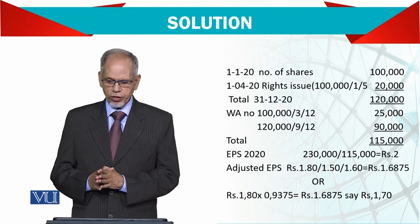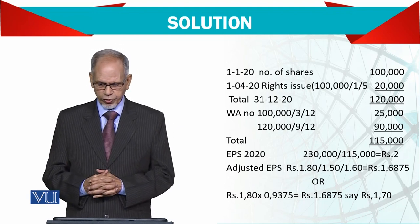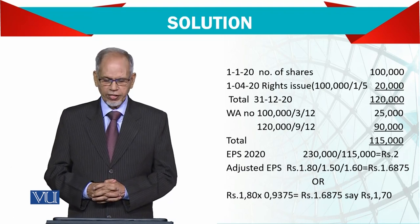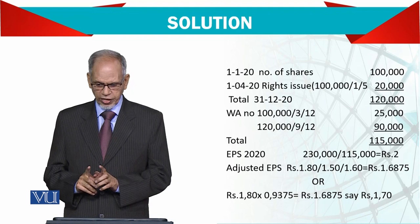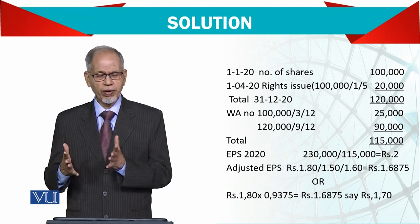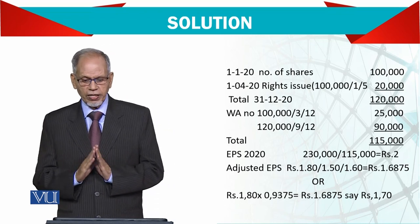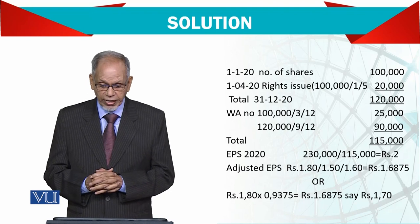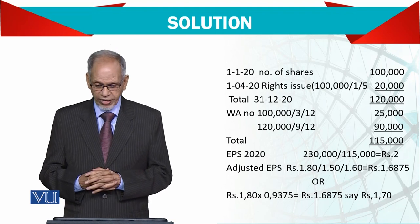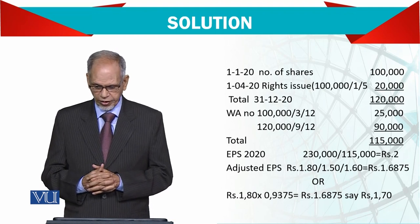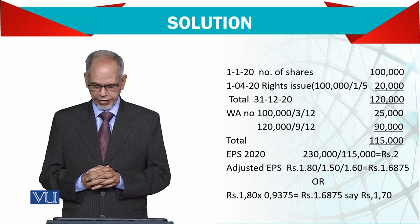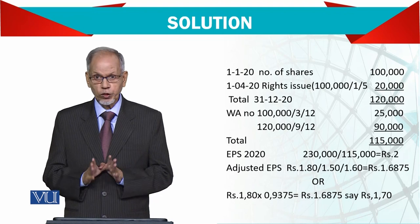Initially the company had 100,000 shares, then the rights issue of 20,000 shares brings the total to 120,000. For the weighted average: initially 100,000 shares ran for 3 months, then 120,000 shares for the remaining 9 months. The weighted average shares come to 115,000. Therefore the 2020 EPS is 230,000 divided by 115,000, which equals 2 rupees.